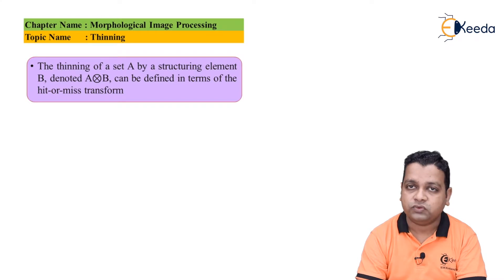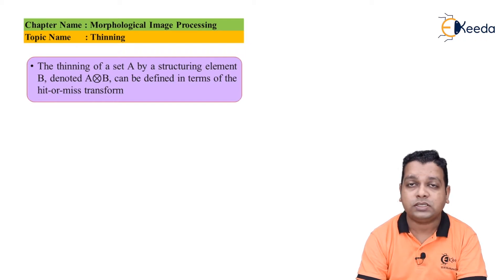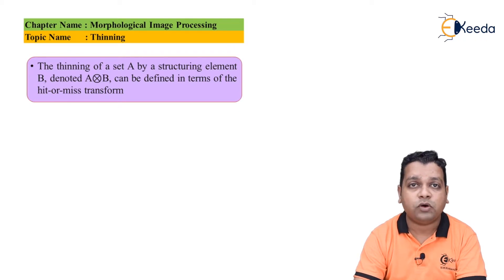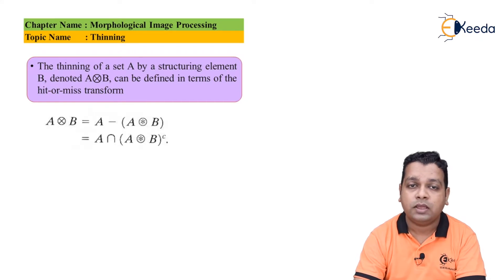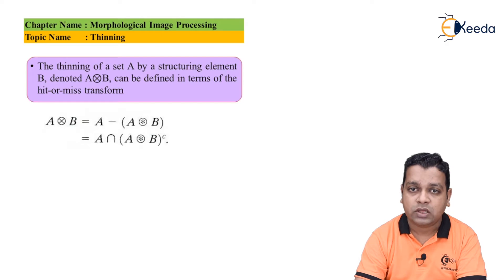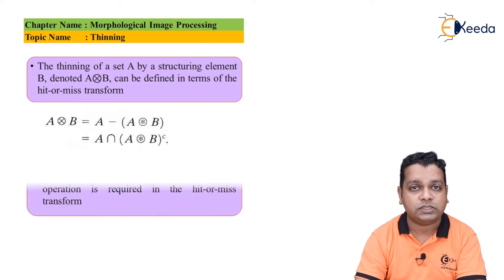For the thinning procedure used with Morphological Image Processing, we take input represented by set A along with a structuring element, the usual notation by capital B. The thinning of A by B uses a symbol of a circle having a cross sign inside it. This can be defined with the help of the hit-or-miss transformation. The representation is: A thinned by B equals capital A minus the hit-or-miss transformation between input set A and structuring element B. Alternatively, thinning can be obtained as the intersection of input set A with the complement of the result of the hit-or-miss transformation.